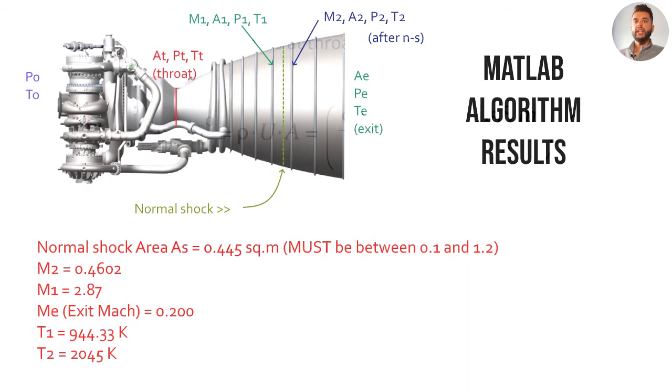In my MATLAB algorithm I plugged in guess values for normal shock area. Obviously it has to be between 0.1 and 1.2 square meters because we're in the middle of the nozzle. You get area shock as about 0.445 square meters. Mach 2 equals 0.4602. Mach 1 equals 2.87 before the normal shock. The exit Mach will now be lower than Mach 2 because the flow becomes subsonic. In incompressible flows, subsonic flows will slow down. You get about 0.2 and you also get temperatures in the algorithm.